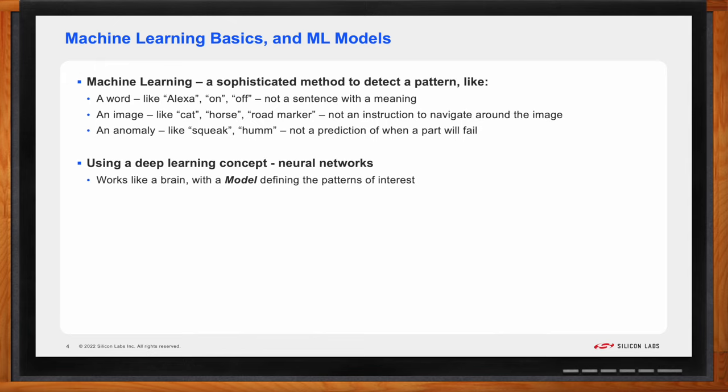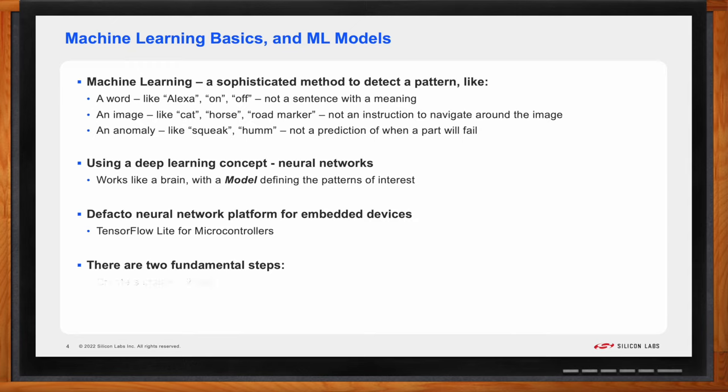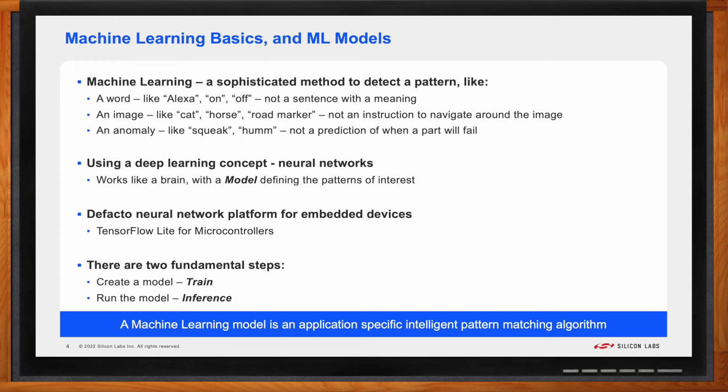This application-specific trained brain is commonly referred to as a model. The de facto standard machine learning platform for running on embedded devices is TensorFlow Lite for microcontrollers. It was developed at Google as an optimization for the widely used TensorFlow platform that is used for cloud-based artificial intelligence and machine learning applications. So to finish this little introduction, I just want to introduce two terms. One is training. Training is the act of creating a model. When using machine learning technology for a particular application, a developer needs to create, develop, or train a model. The other term is inference. This is when a model is deployed in the field, and it runs analyzing the real-world data it's observing. This is the act of making a prediction about the sensor data being interpreted. So the important takeaway is that a machine learning model is an application-specific, intelligent, pattern-matching algorithm. It has to be generated very precisely and purposefully for each application.